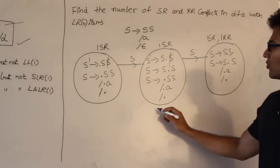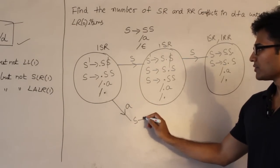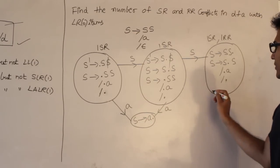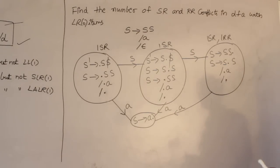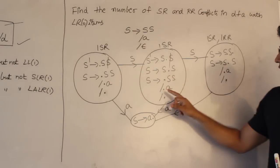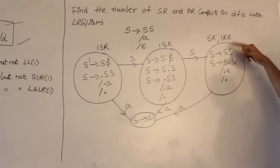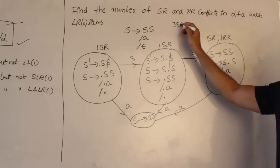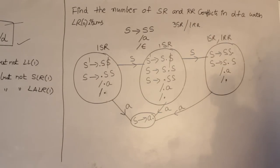On small a from I0, I1, and I2 all give the same state S derives a dot. In total: I0 has 1 SR conflict, I1 has 1 SR conflict, and I2 has 1 SR conflict plus 1 RR conflict. Therefore the canonical collection has 3 SR conflicts and 1 RR conflict.